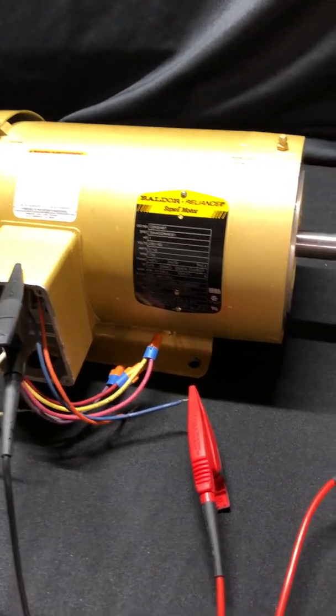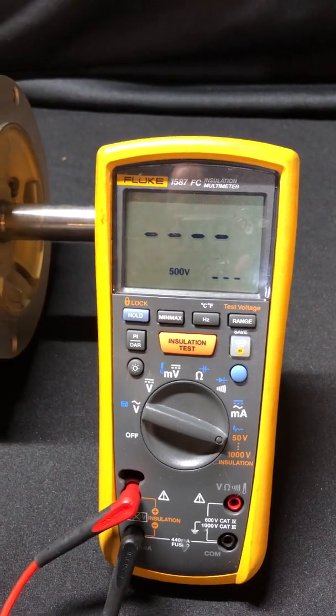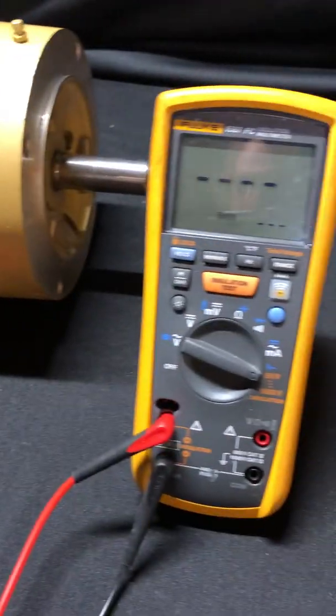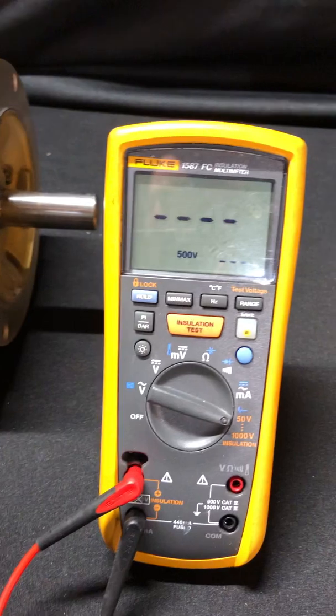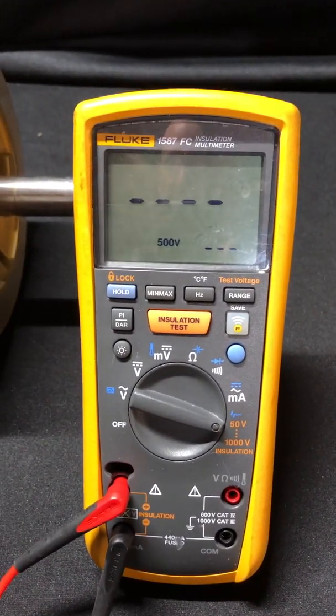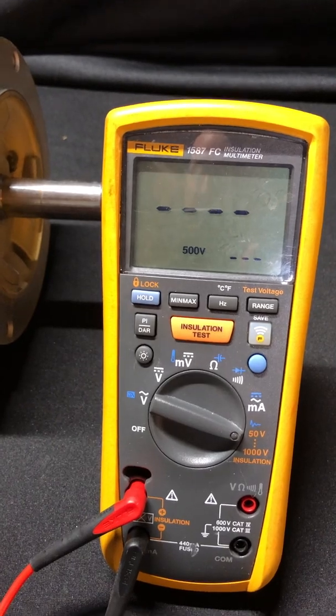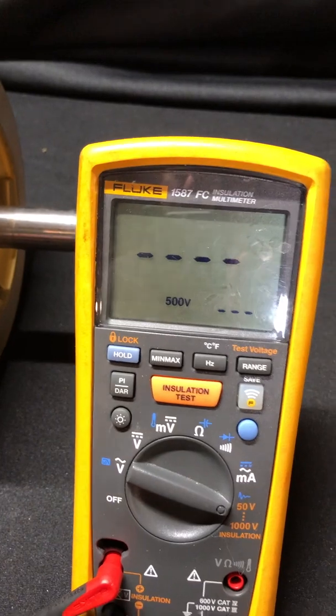In this scenario I have connected my Fluke 1587 FC up to the motor and I'm connected from phase A to ground. Now comes the test voltage. What do we apply? Well the general rule of thumb has been to double the nominal voltage. So this is a 208 volt motor, so typically doubling that I would be wanting to test at 500 volts. Let's go ahead and perform that test.